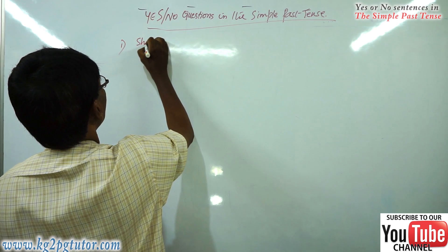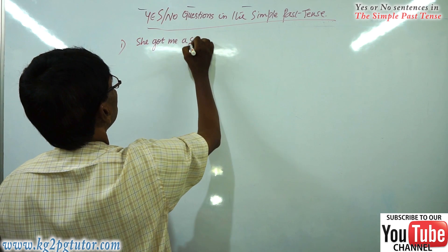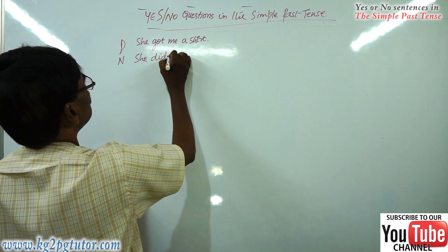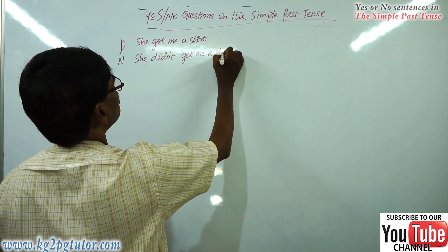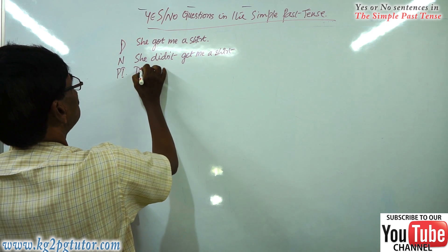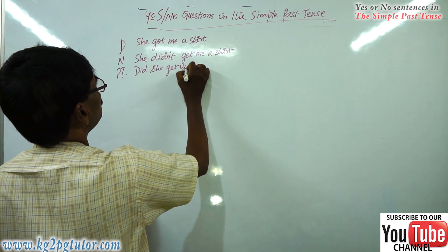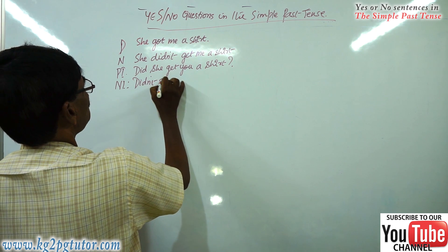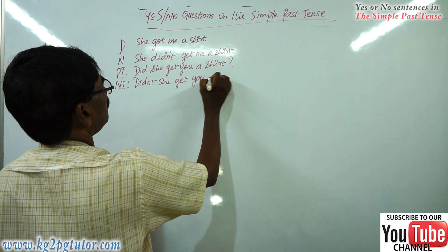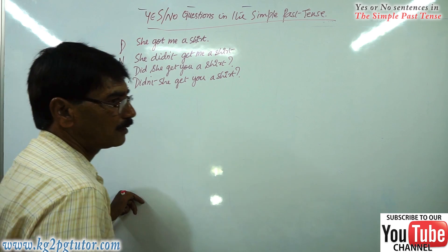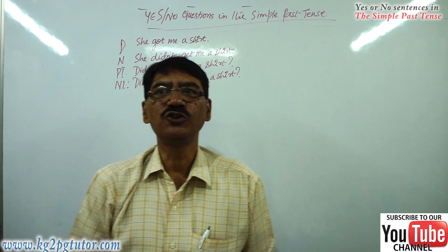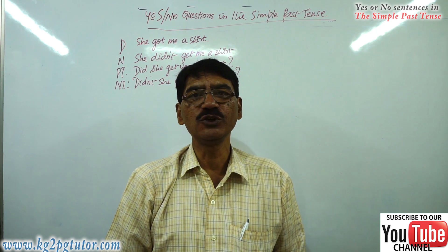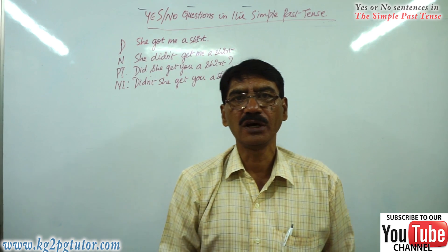Number one: 'She got me a shirt.' Positive — 'She got me a shirt.' Negative — 'She didn't get me a shirt.' Positive interrogative — 'Did she get you a shirt?' Number two: 'I drove my new car. I didn't drive my new car. Did you drive your new car? Didn't you drive your new car?'